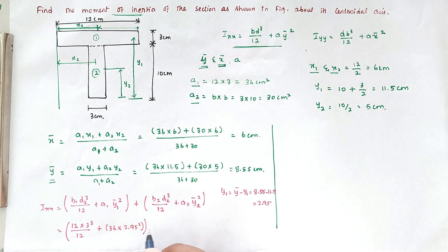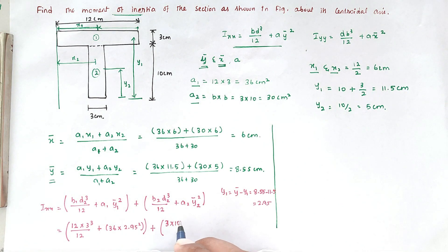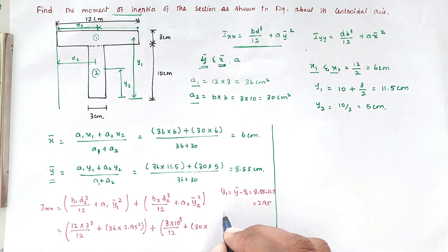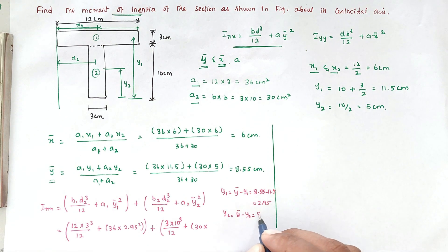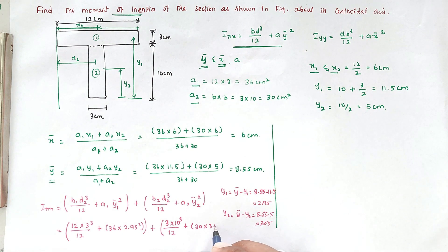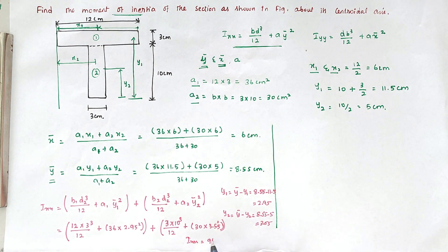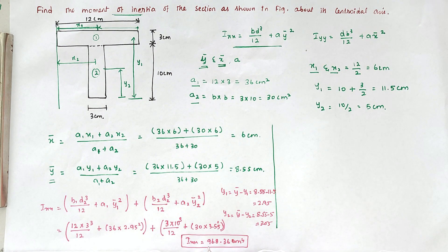For section 2, the distance ȳ2̄ equals ȳ minus y2, that is 8.55 minus 5 = 3.55 cm. Substituting all values and solving, Ixx = 968.36 cm⁴. This is the moment of inertia about the x-axis.